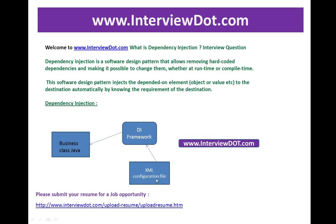We are relying on the dependency framework to push the dependent objects to our business class. So if you want Oracle, you configure it. After two months, if you want to change to Postgres, you just change the XML file and you don't have to touch the business class at all — you don't need to compile it again. That's where the power of dependency injection lies: it has the power to push the dependent objects at runtime or compile time. Only the XML configuration file needs to change and everything will work.